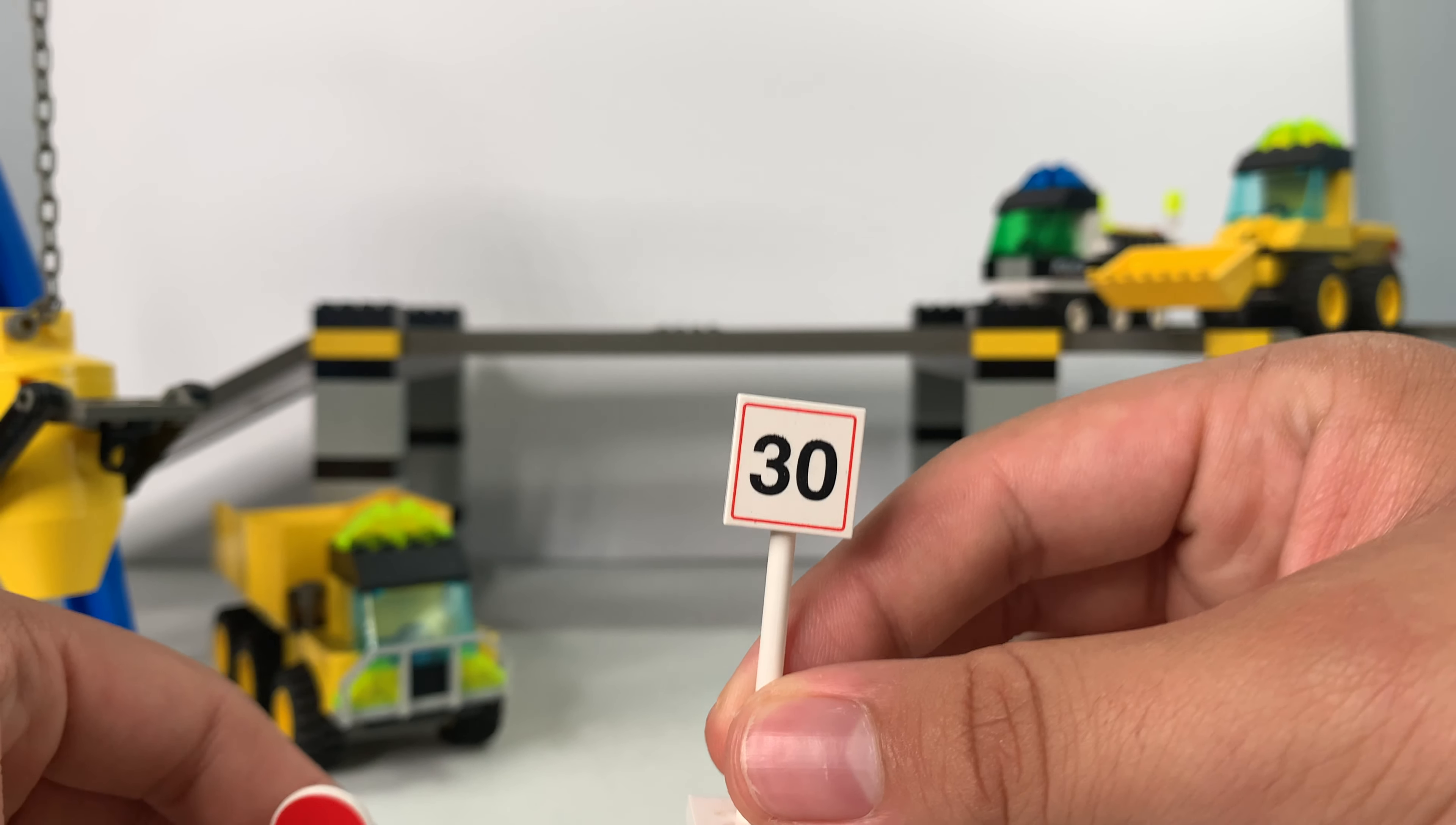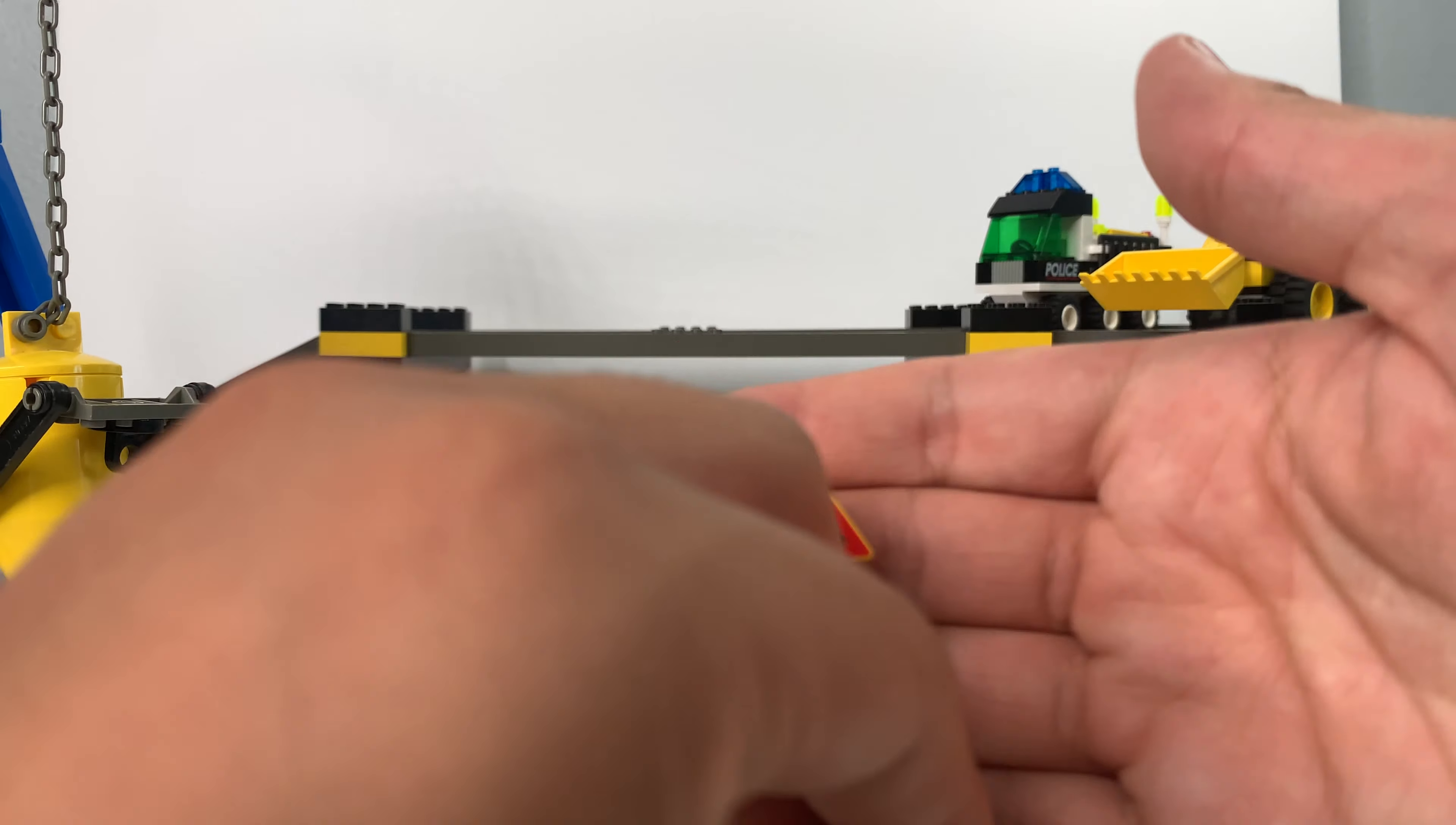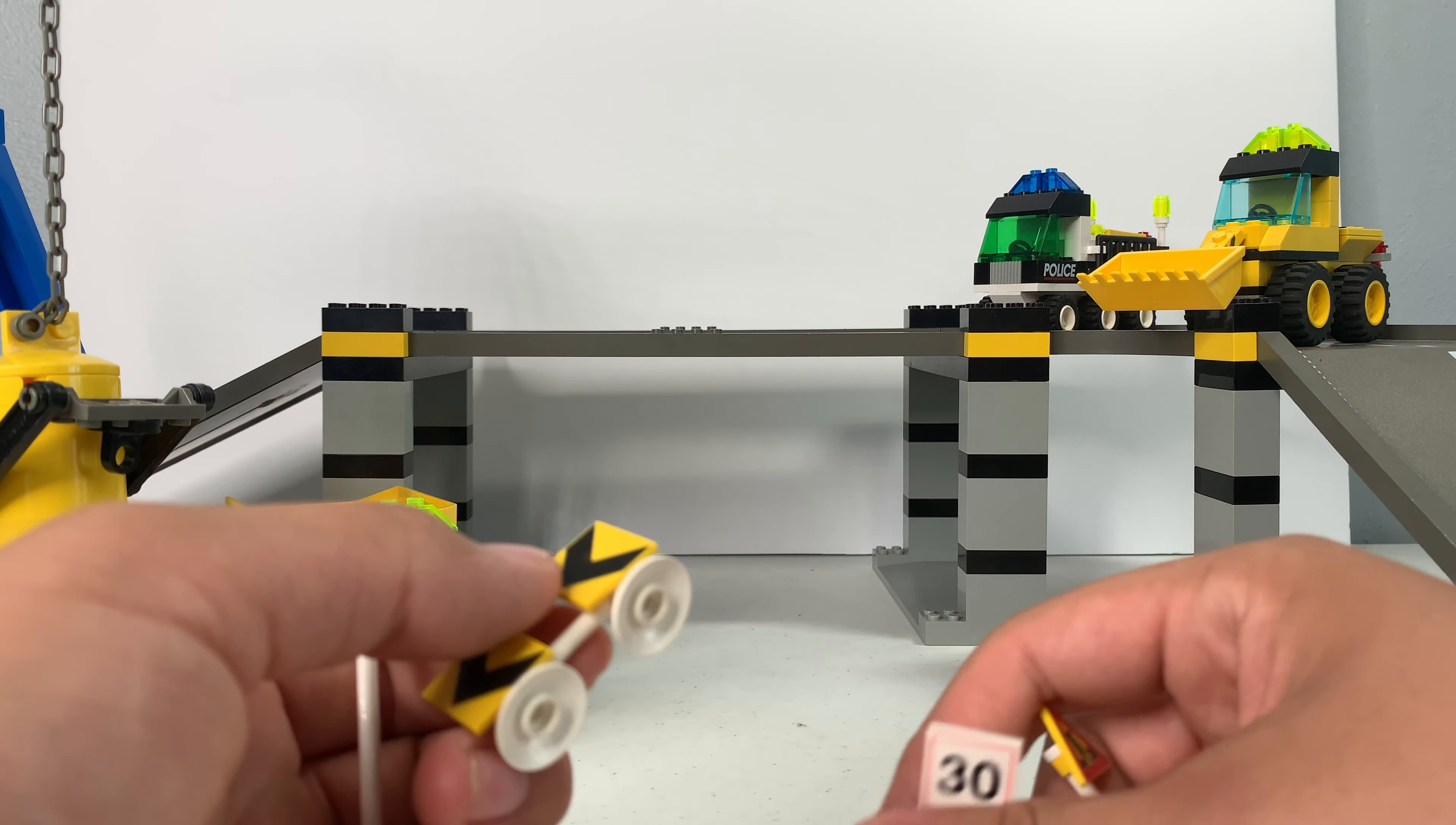A 30 miles per hour speed sign, a stop sign, I don't know what this sign means but I think it just means stop or something. Another construction road sign, you can get two of these, and a sign telling people to switch into another lane. Those are all the road signs you get.